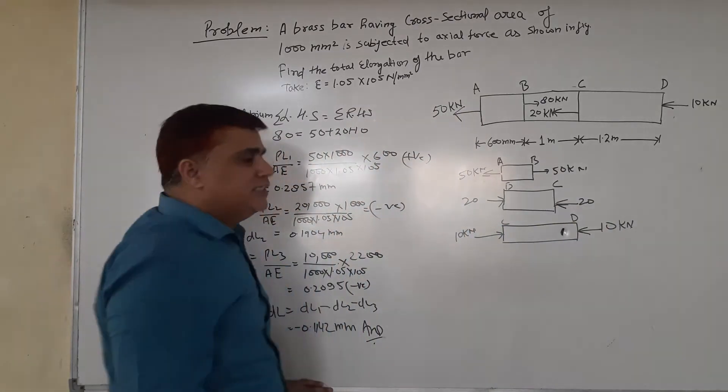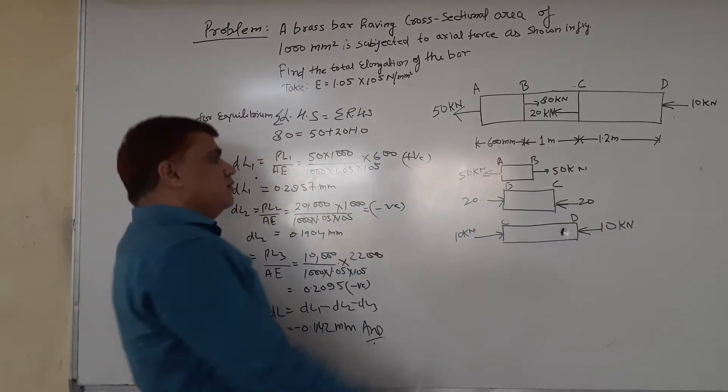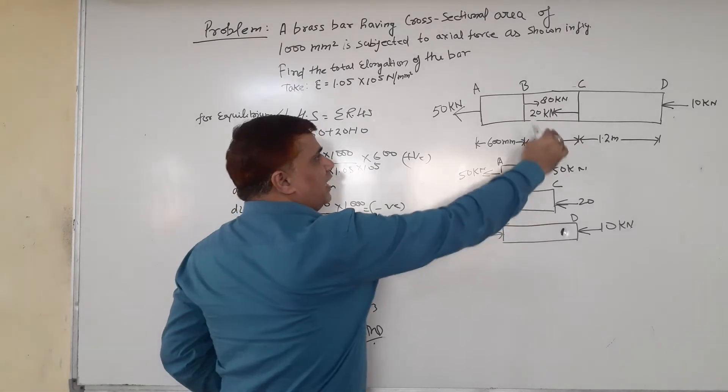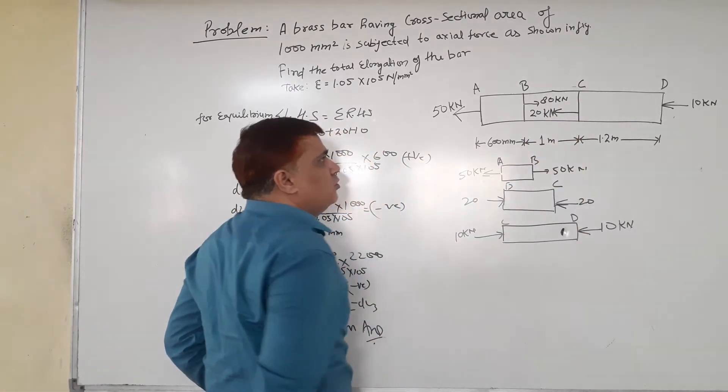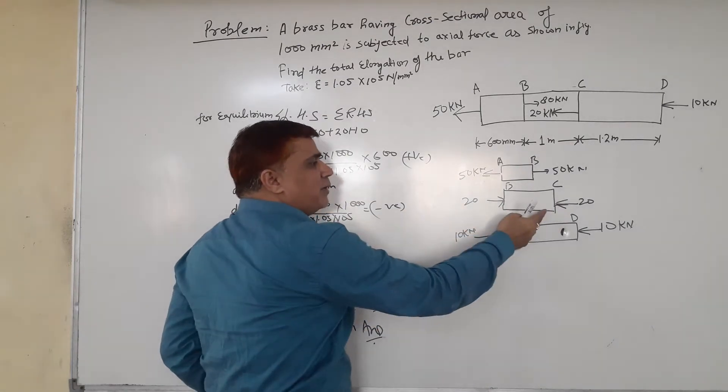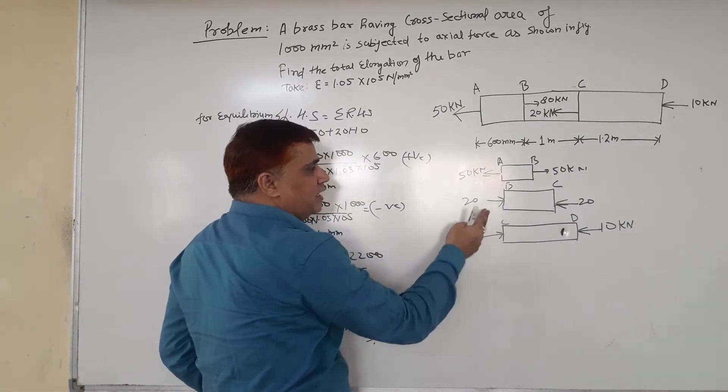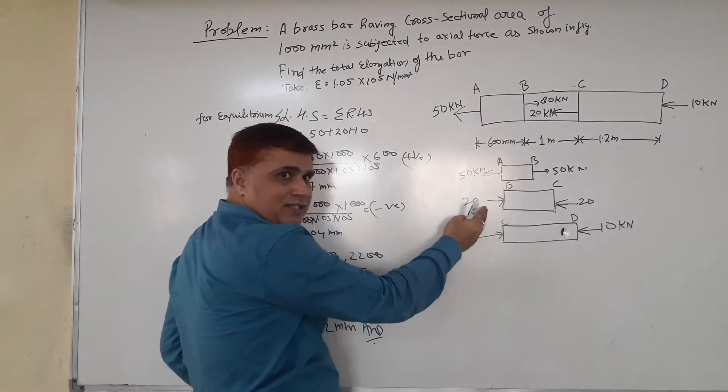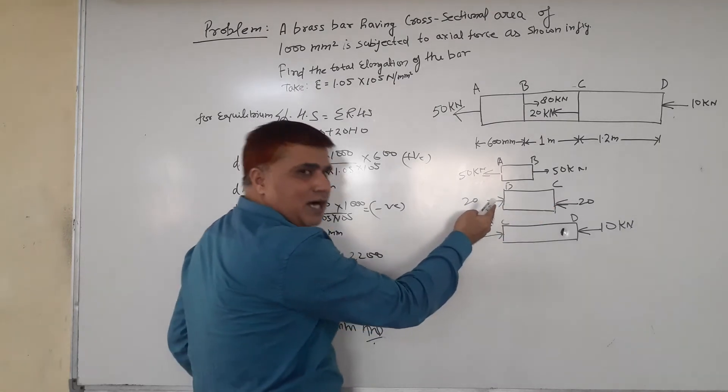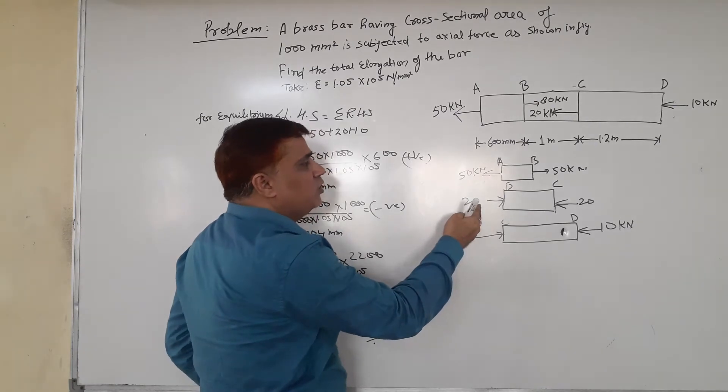Now we consider the second part, BC. Here we see that on section C, 20 kN is acting compressively. For equilibrium, we have to apply 20 kN.